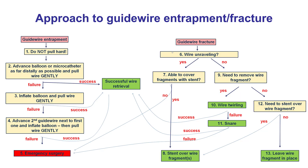In summary: guidewire entrapment and fracture can be a very serious complication leading to emergency bypass surgery or death. The key for prevention is to not pull hard if a guidewire becomes entrapped. Instead, advance a balloon or microcatheter as far distally as possible — in the vast majority of cases, this alone will successfully retrieve the wire. Sometimes more aggressive maneuvers, like a second guidewire and balloon next to the entrapped wire, may be required. If the guidewire fractures and there is unraveling — which can be visualized with intravascular ultrasound — the key question is whether the fragments can be removed or covered with stents. If yes, conservative percutaneous management is done; if not, emergency surgery may be required.